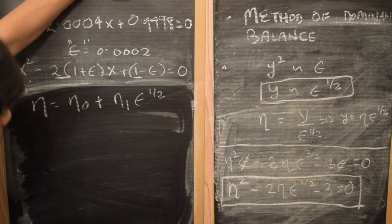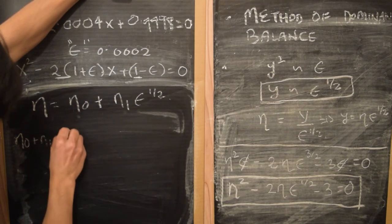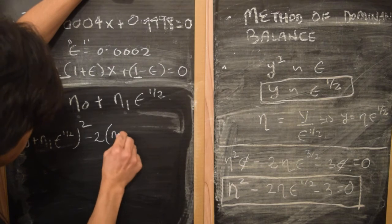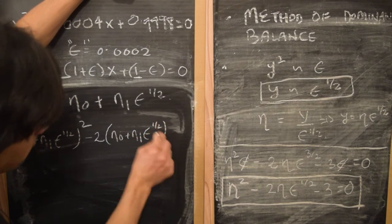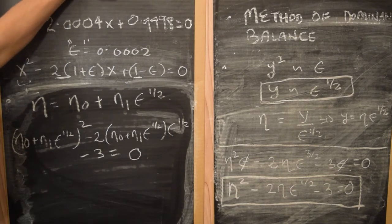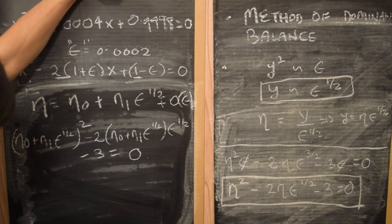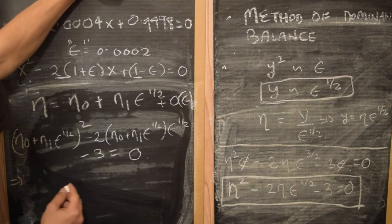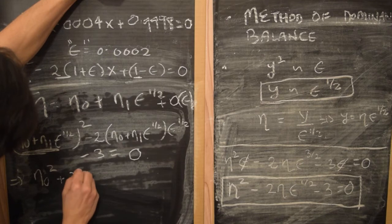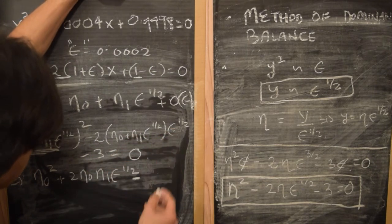Substituting the ansatz: η² becomes (η₀ + η₁·ε^(1/2))², minus 2(η₀ + η₁·ε^(1/2))·ε^(1/2), minus 3 equals zero — ignoring terms of order ε and higher. Expanding: we get η₀² plus the cross term 2η₀η₁·ε^(1/2), then minus 2η₀·ε^(1/2), minus 3 equals zero.